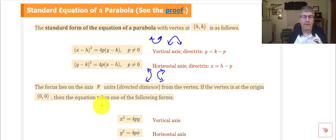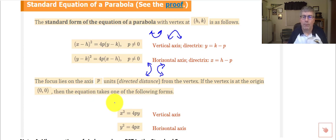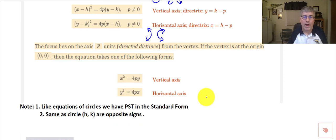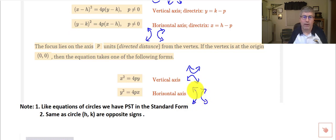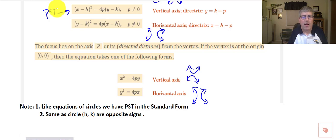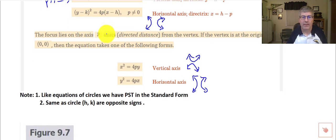The focus lies on the axis p units — the direct distance from the vertex, as we saw in our previous diagram. If the vertex is at the origin, the equation takes one of these following forms: x squared equals 4py for the vertical axis — that parabola will open up or down — and for the horizontal axis, that parabola will open left or right. Note, like the equations of circles, we have a perfect square trinomial in standard form. Same as a circle, h and k are opposite signs, which also tells us what our vertex of our parabola is, kind of like the center of our circle.